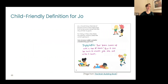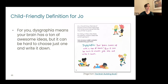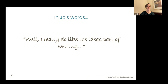Same thing for Joe — looking at her strengths and challenges, she ended up with a diagnosis of a learning disability in writing. We use the fancy term dysgraphia, and for her it means her brain has a ton of awesome ideas, but it can be hard to choose just one and write it down. She reflected: 'I do like the ideas part of writing' — and her mom's jaw just dropped to the floor, because she had never heard one positive word about writing from this girl ever in her life.